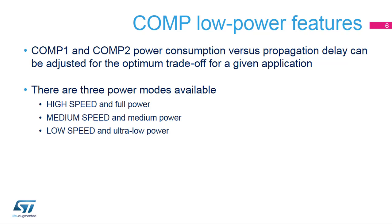The high-speed mode would be preferred for power conversion applications, for example a motor control design, while ultra-low-power mode would be the right choice for battery-powered applications where reaction times are not critical, for example in PIR sensor monitoring.